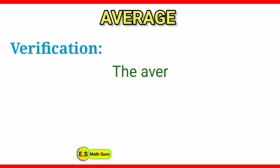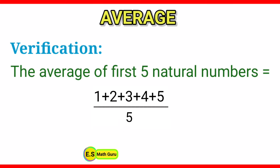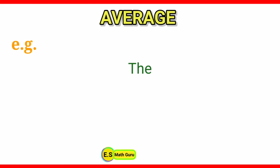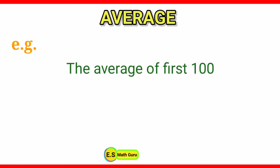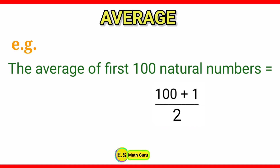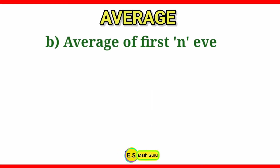Now let us verify: the average of first 5 natural numbers is equal to (1+2+3+4+5)/5, which is equal to 15/5, which gives 3. Therefore it is verified. Let us take another example: the average of first 100 natural numbers is equal to (100+1)/2, which is equal to 101/2, which gives 50.5.